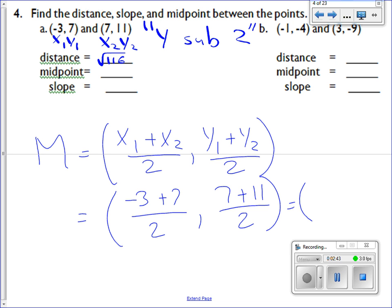4. So 4 over 2 is 2. And then I do 7 plus 11 which is 18. 18 over 2 gives you 9. So (2, 9) is the ordered pair for the location of the midpoint.